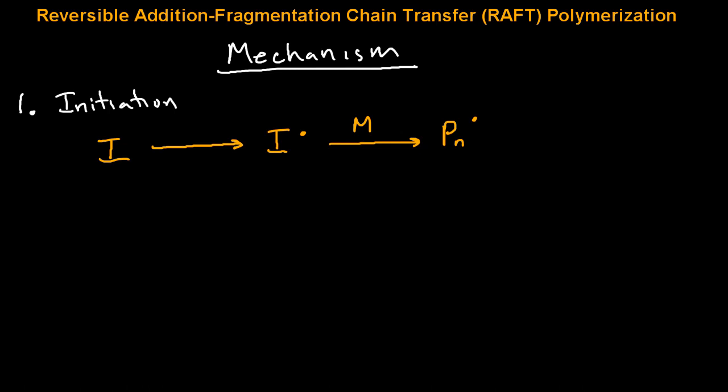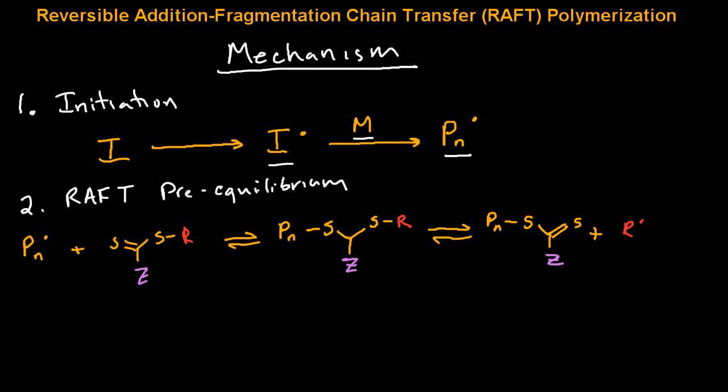First is the initiation step, where a small amount of initiator will generate some radical species, which will polymerize a small amount of monomer to create a few growing polymer chains. The next step is the RAFT pre-equilibrium step.